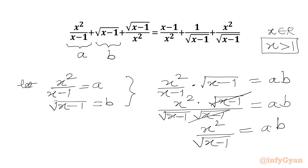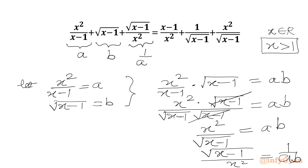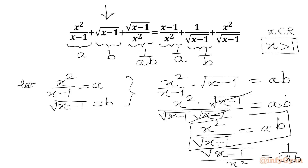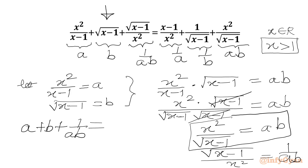From here I can flip numerator and denominator and write √(x−1) over x² is 1 over ab. So in the RHS this would be 1 over a, and 1 over √(x−1) equals 1 over b, and x² over √(x−1) is ab. So our equation becomes a + b + 1/(ab) = 1/a + 1/b + ab.